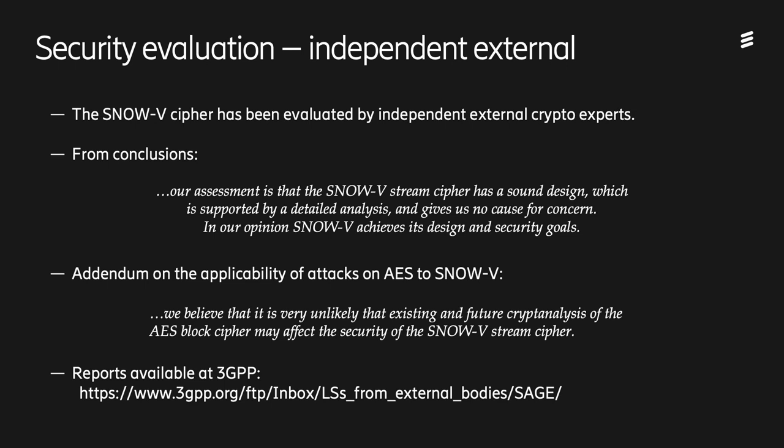To be considered for standardization in 3GPP, a new cipher such as SNOW-V, even if it builds on a well-known construction such as SNOW 3G, must be evaluated by an independent group of experts. This was done during the past year, and the conclusion is that the evaluators did not find any concerns and SNOW-V achieves its design and security goals. Because SNOW-V uses the AES round function as an S-box, a natural question would be how future cryptanalysis of AES would affect SNOW-V. The evaluators concluded that since the usage of the round function is so very different between AES and SNOW-V, and the round key is constant, it is very unlikely that future cryptanalysis of AES would affect the security of SNOW-V. The external evaluation reports are available at this address as part of the communication to 3GPP.